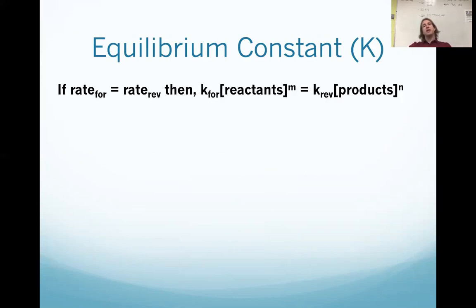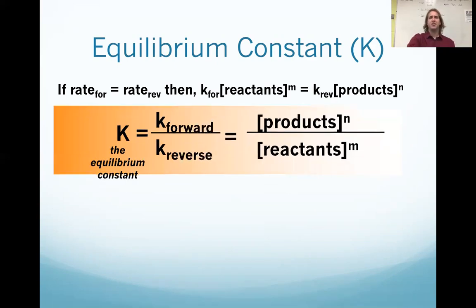If your rate forward equals your rate reverse, that means we can take whatever those reactants' rate is, set them equal to the products' rate, the reverse rate, and set those two things equal to each other. Well, if they're equal, then we can make a proportion. And that's really what we do. We say we're going to call K forward divided by K reverse. That becomes this value we call the equilibrium constant. It's just going to tell us, are we favoring to make more products, or are we favoring our reactant side?